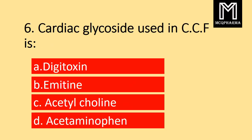Question number 6. Cardiac glycoside used in CCF is: Option A Digitoxin, Option B Emetine, C Acetylcholine, D Acetaminophen. Correct answer: Option A Digitoxin.